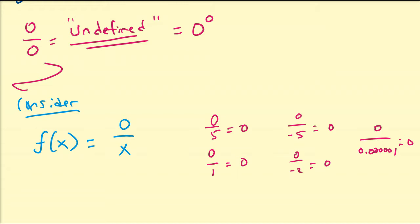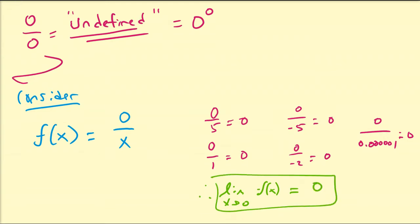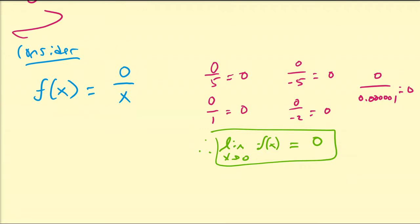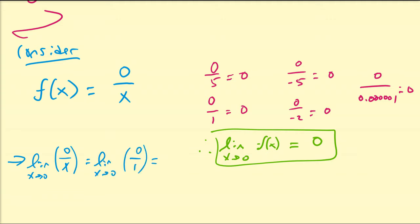In the calculus realm, we usually express this kind of idea via limits. So we can say that the limit as x approaches zero of f(x) is going to be equal to zero. We can easily prove this using L'Hôpital's rule: the limit as x approaches zero of this expression, we take the derivative of the top and bottom, and we get zero divided by one, which gives us zero. So why not define it to be zero? At least from this function, that seems to be a reasonable thought.